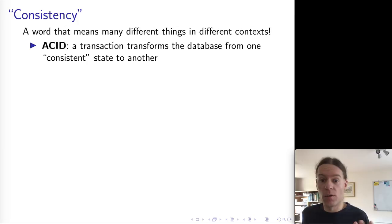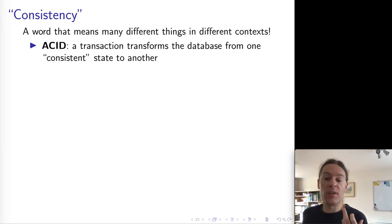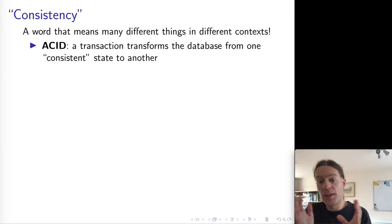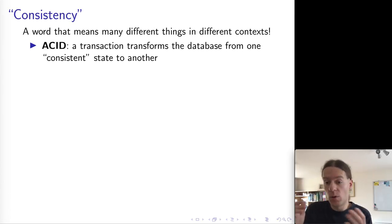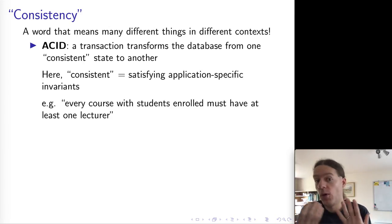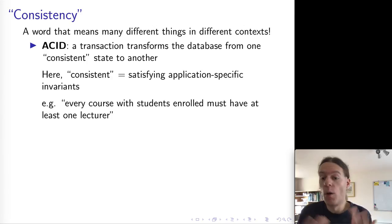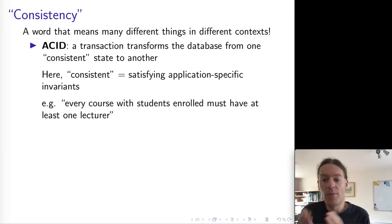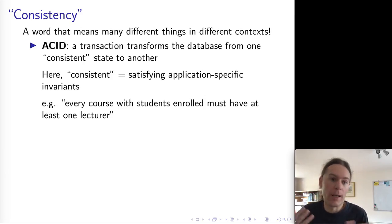So an ACID transaction — the C stands for consistency, and in this context the meaning of consistency is a property of a database state. We say that the database is in a consistent state, and if you apply a good transaction to it then it moves the database from one consistent state into another. Consistent here really means that the state of the database satisfies certain invariants or constraints that the application has set. As one example, if you have a university database you might have a consistency requirement that whenever a course has at least one student enrolled in it, it must also have a lecturer.